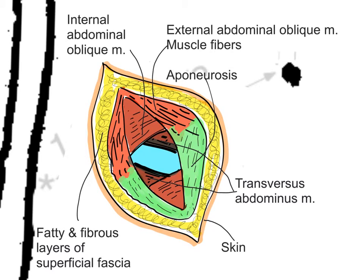Looking for the appendix through the small hole requires anatomical skill — being able to recognise the colon versus small intestine is very useful, as is following the tenea coli down to their origin at the base of where the appendix should lie. Once the operation is over, the various layers are closed with sutures, and finally the skin is closed and the operation is complete.